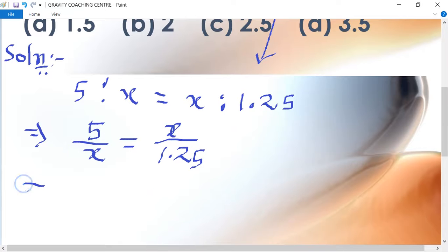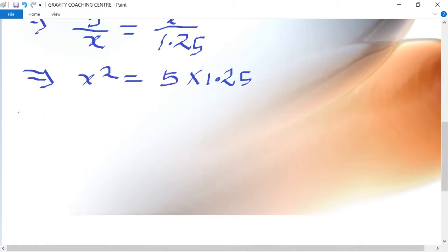And x square equal to 5 into 1.25, implies that 5 into 1.25.